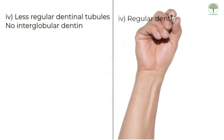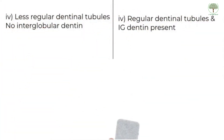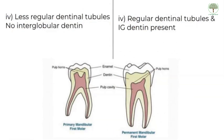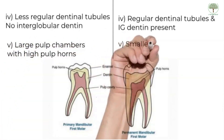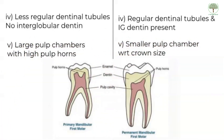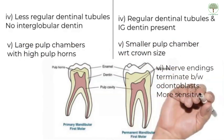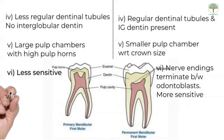The primary teeth have large pulp chambers with high pulp horns. The pulp is also more cellular and vascular with more potential for repair. The innervation also differs for the permanent teeth — the pulpal nerve endings are located between the odontoblasts, making the permanent teeth more sensitive.